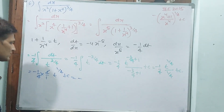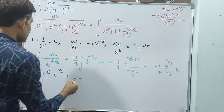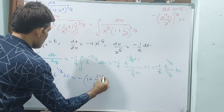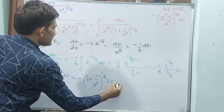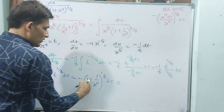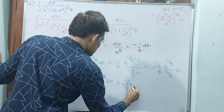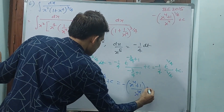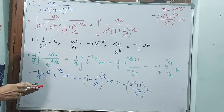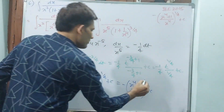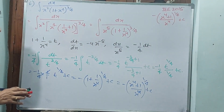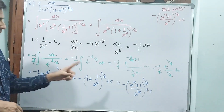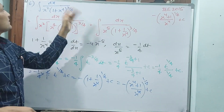Now compare. That is equal to minus 1 by 4 into 4 by 1 — the denominator cancels — and t power 1 by 4 plus c. That is equal to minus t power 1 by 4. What is t? t is 1 plus 1 by x to the power of 4, whole to the power of 1 by 4, plus c. Also internally: x squared power 4 plus 1 by x squared power 4, whole to the power 1 by 4. This minus is also important — minus of (x to the power of 4 plus 1 by x to the power of 4) whole to the power of 1 by 4, plus c. This is the answer.